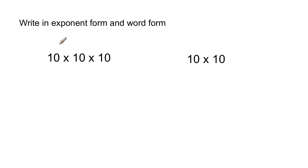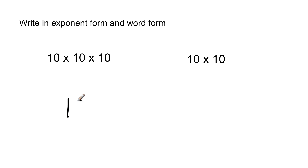Now that you know about base numbers, you know that the base number is the number that's being multiplied. So if I'm going to write this in exponent form, I'm going to take the three tens — and I'm not doing 10 times 3, because it clearly isn't 10 times 3; it's 10 times 10, then times another 10. So if I take the three tens and make that into the base number, then my exponent tells me how many times the base number was used in the multiplication. It's used 3 times, so my exponent is 3. That is 10 to the third power.